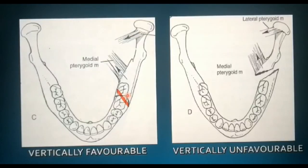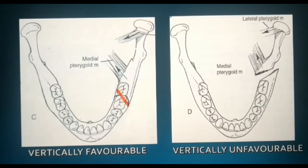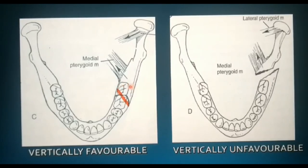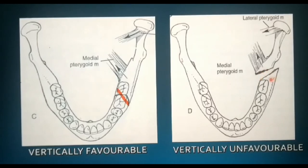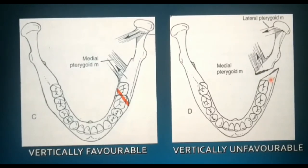Likewise, a vertically favorable fracture runs from the buccal plate posteriorly and medially — here also you can appreciate the locking effect at the fracture site. Whereas in a vertically unfavorable fracture, there is no locking effect present, and this enables unopposed action of the pterygomasseterc sling, thus displacing the posterior segment.